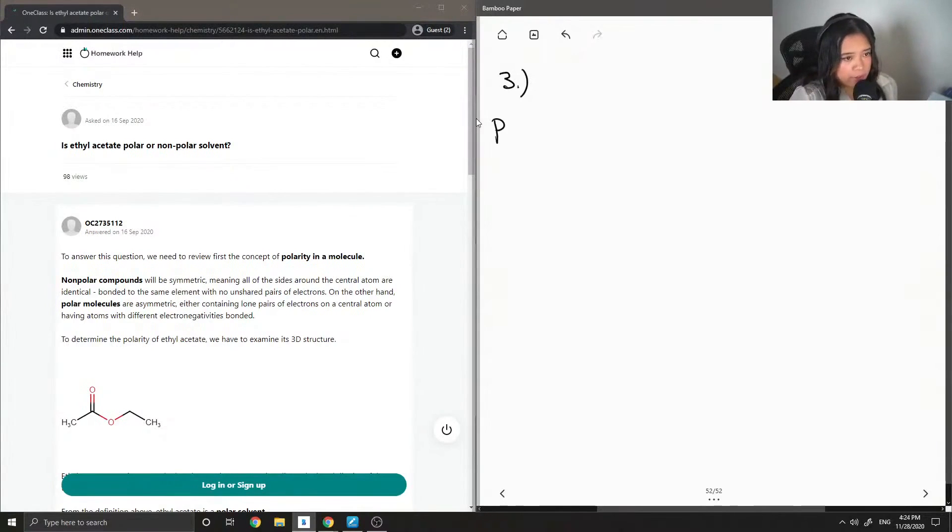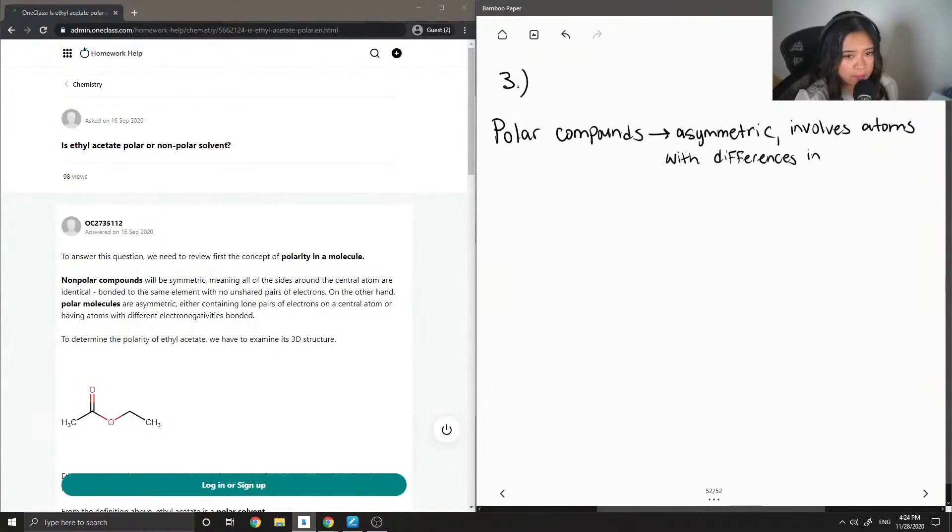So let's first recall the definition of what a polar compound is. Polar compounds are typically asymmetric and they tend to involve atoms with differences in electronegativity.